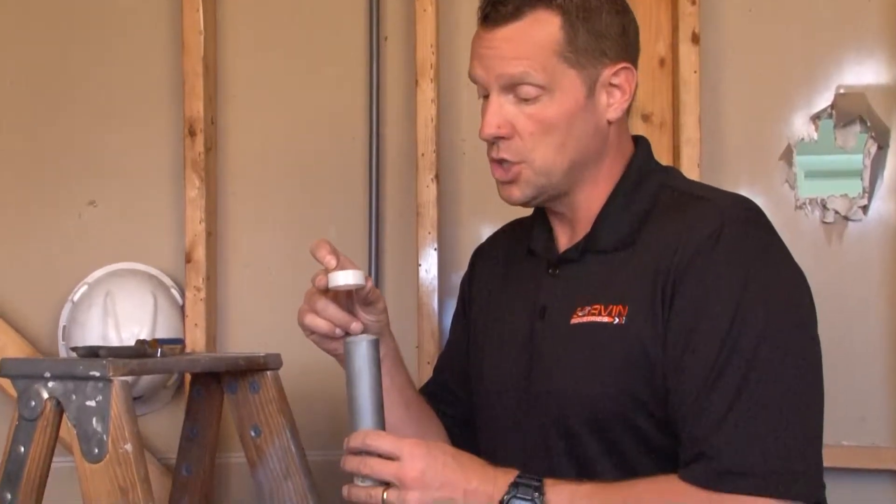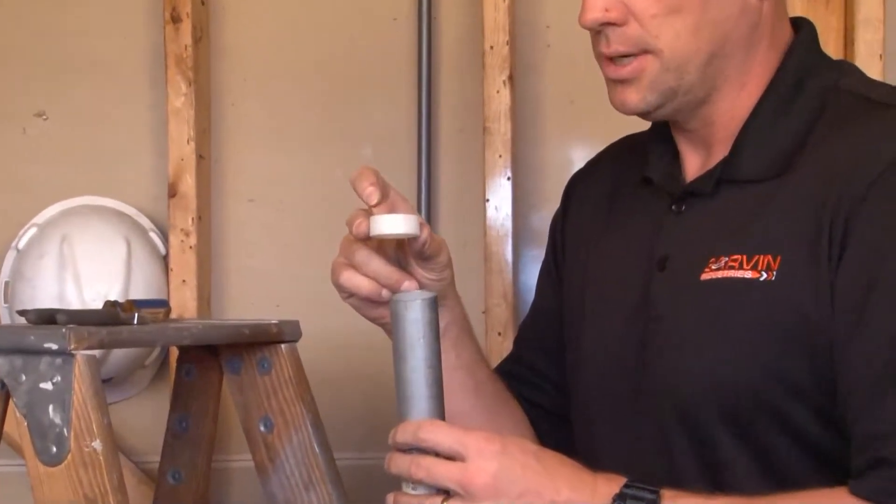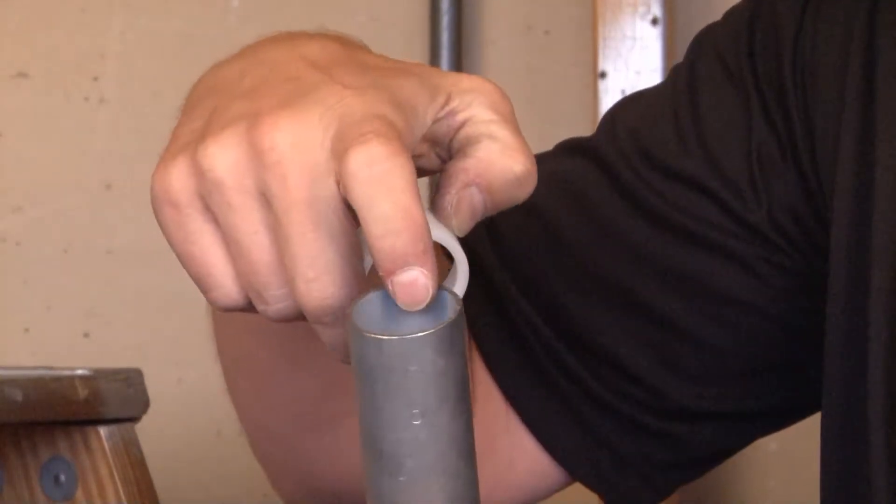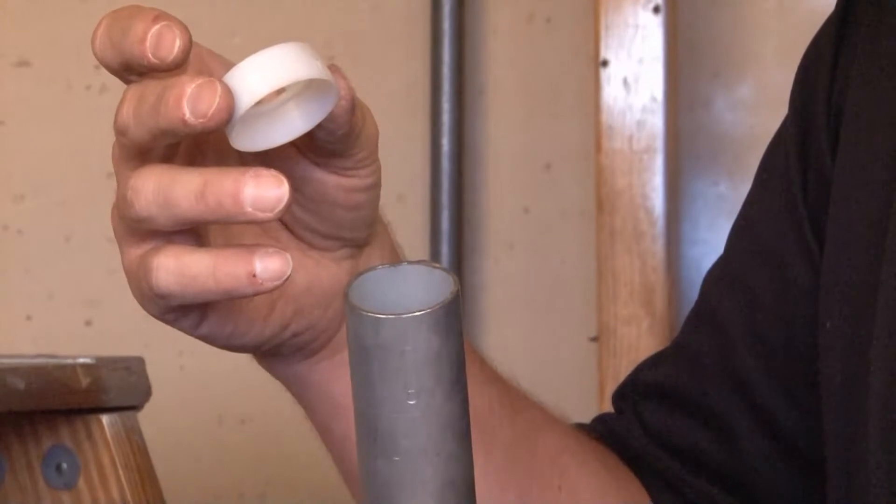IB125 is an insulating bushing that is used for inch and a quarter EMT conduit. Anytime you pull low voltage cables through a conduit, it's very important to protect the sharp edge on the end of the conduit.